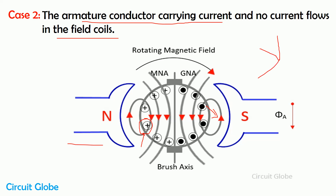The direction of the armature conductor current is given by the Fleming right-hand rule. The Fleming right-hand rule says: spread the right-hand fingers — the thumb shows the motion of the conductor, the index finger shows the direction of the magnetic field, and the middle finger shows the direction of the current. In a DC machine, the direction of armature conductor current is given by the Fleming right-hand rule. Because of the current, flux is induced in the conductor, and the direction of that flux is given by the Maxwell cork screw rule.